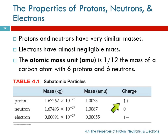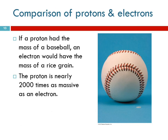And the charges: the proton is positive — protons are positive, they both start with P. Neutrons are neutral, no charge on the neutrons. And then the electron is negative 1. So protons are plus 1 in charge, electrons are minus 1 in charge. For relative size: if the proton was the size and mass of a baseball, the electron would have the mass of a grain of rice — really just not significant in terms of mass.